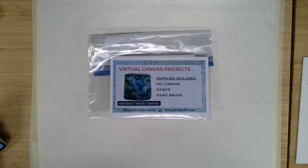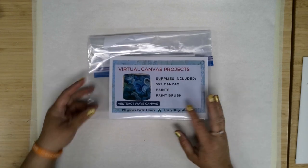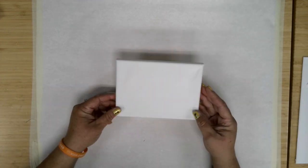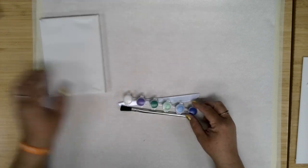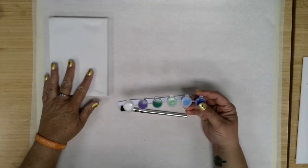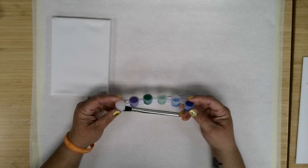This month's project is kind of an abstract wave canvas. Let's start with a look at the supplies being provided. In our bags this month, we have a few things. We've got a small 5x7 canvas, so this should be a pretty quick project. Definitely, you should have enough paints if you've got other canvas or have a source for canvas that you want to pick up.